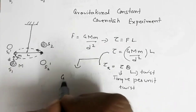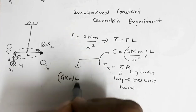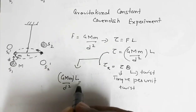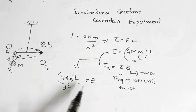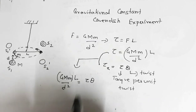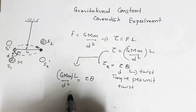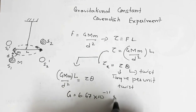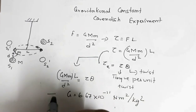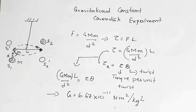At equilibrium, the two torques are equal, so we can write: G·M·m·L / d² = τ·θ. The values of M, m, L, d, τ, and θ were all known. Substituting these known values, G was found to be 6.67 × 10⁻¹¹ N·m²/kg². This is how Cavendish performed the experiment and obtained the value of the universal gravitational constant. This video covered the universal law of gravitation and the determination of G by the Cavendish experiment. Hope this is beneficial to you — good luck!